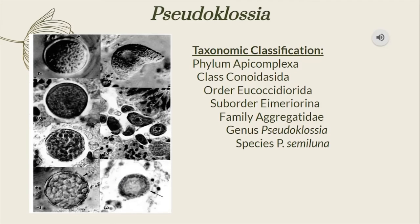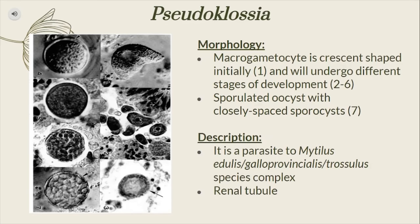Here we will find the taxonomic classification for Pseudoclotia. The image shows the different endogenous stages of Pseudoclotia semiluna, where the first image is the crescent-shaped macrogametocyte, and images 2 to 6 show the various developmental stages alongside microgametocytes. For the 7th image, we will find a spore-related oocyte. Pseudoclotia is a parasite of Mytilis edulis gallioprovincialis, or the Trusoleus species complex, and they are usually found in the renal tubules.